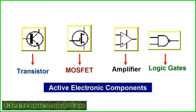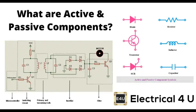Power requirements refer to the electrical power needed for the operation of electronic components and devices. Understanding power requirements is crucial in designing, analyzing, and maintaining electronic systems. Active components such as transistors, operational amplifiers, and integrated circuits require electrical power to function, often supplied by a DC voltage source. Power consumption is a measure of how much electrical power an active component uses during its operation.